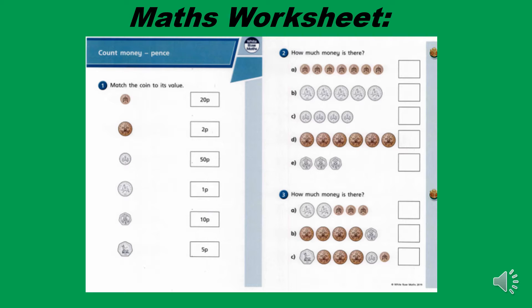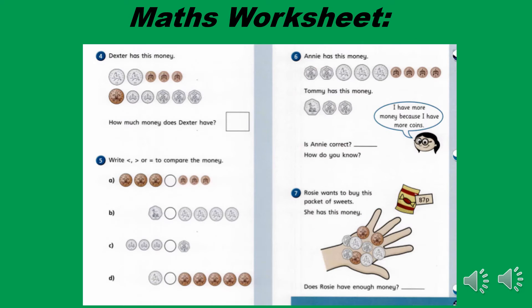So we've got a very simple maths lesson today. We are looking at money. So for the first question, question four says Dexter has this money — please count it to find out how much. Our next question says Annie has this money. Then we have question five.